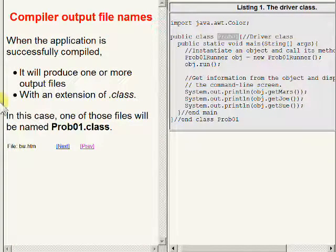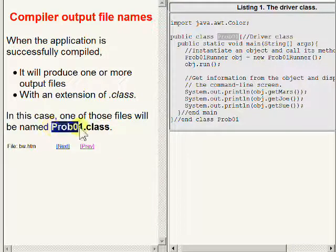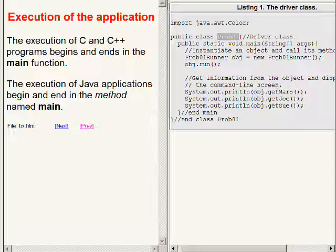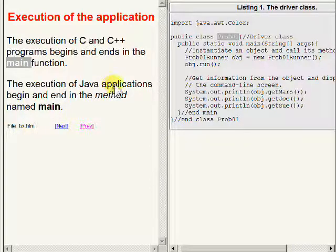When a Java application is successfully compiled, it will produce one or more output files with an extension of .class. For the application we are going to examine in this lesson, one of those output files will be named prob01.class. You may already be aware that the execution of C and C++ programs begins and ends in a function named main.